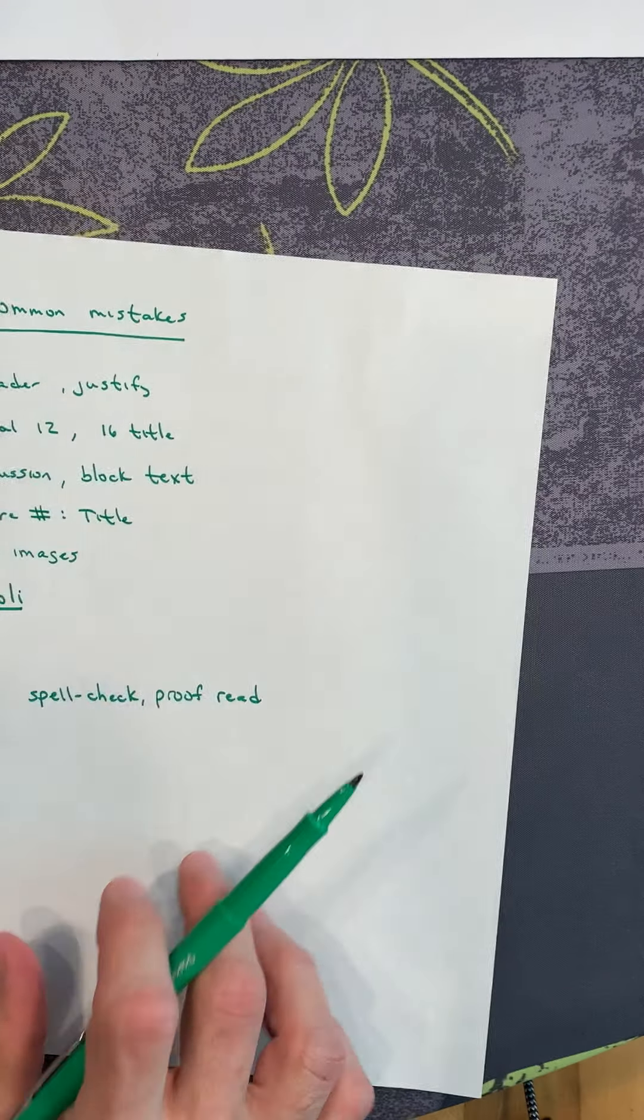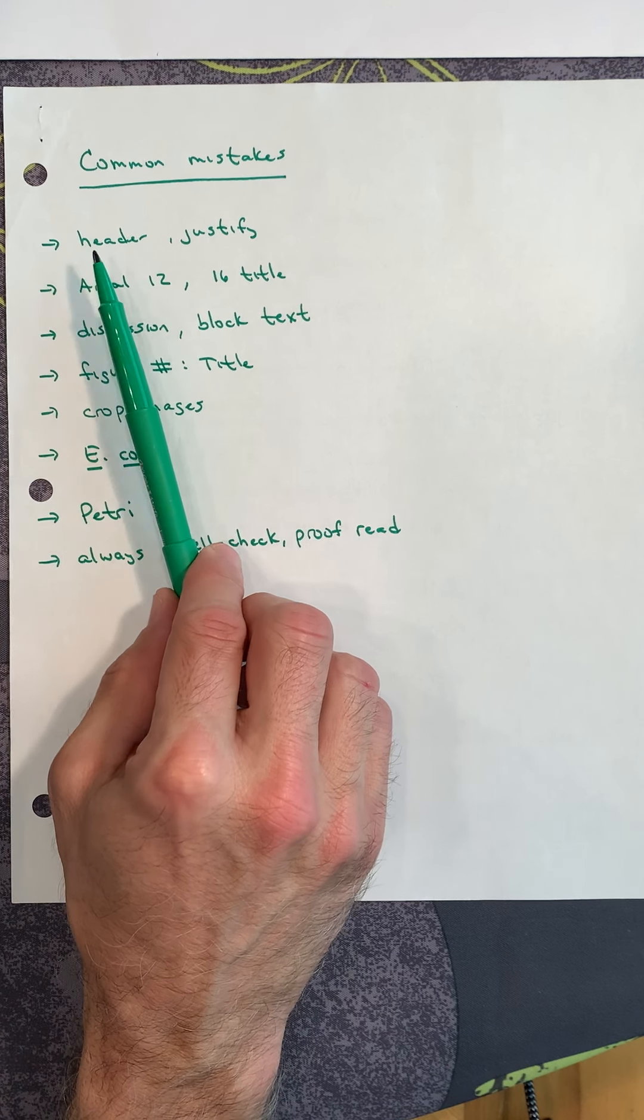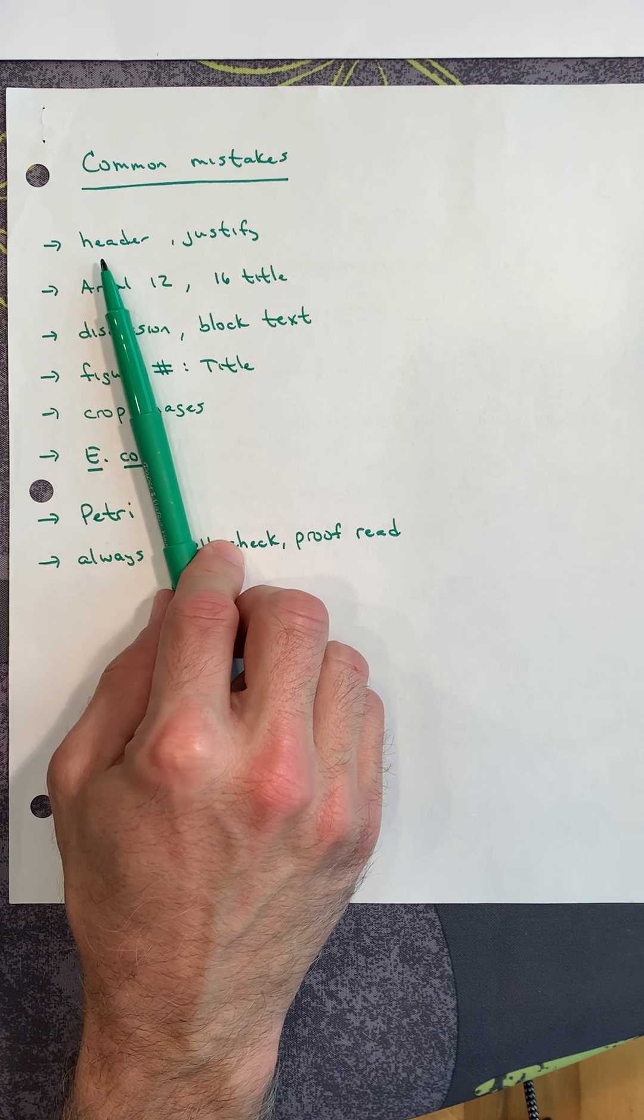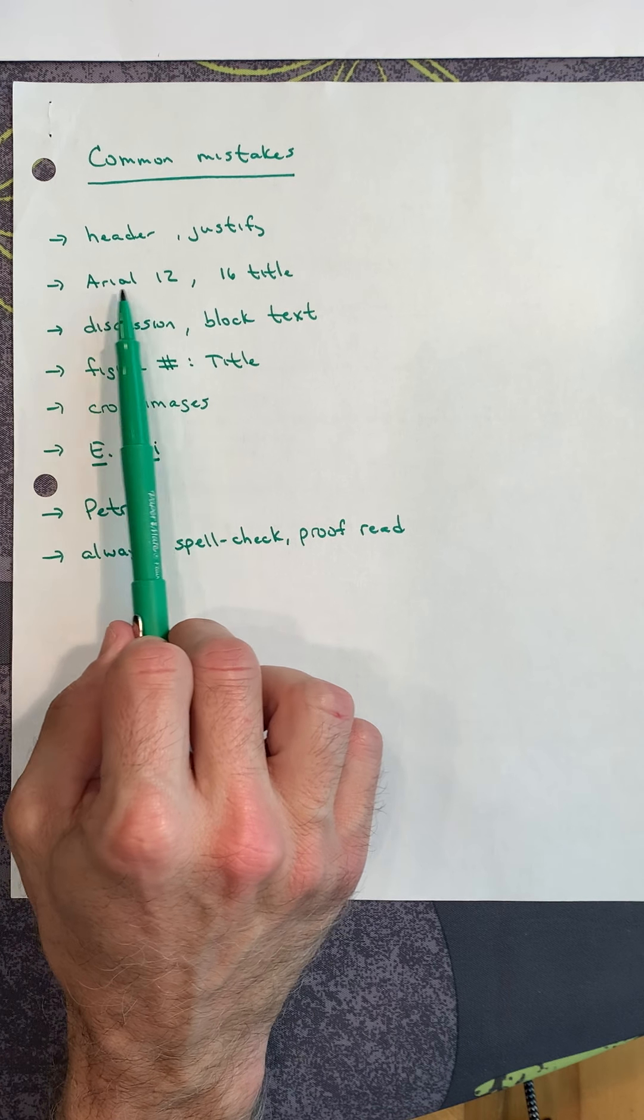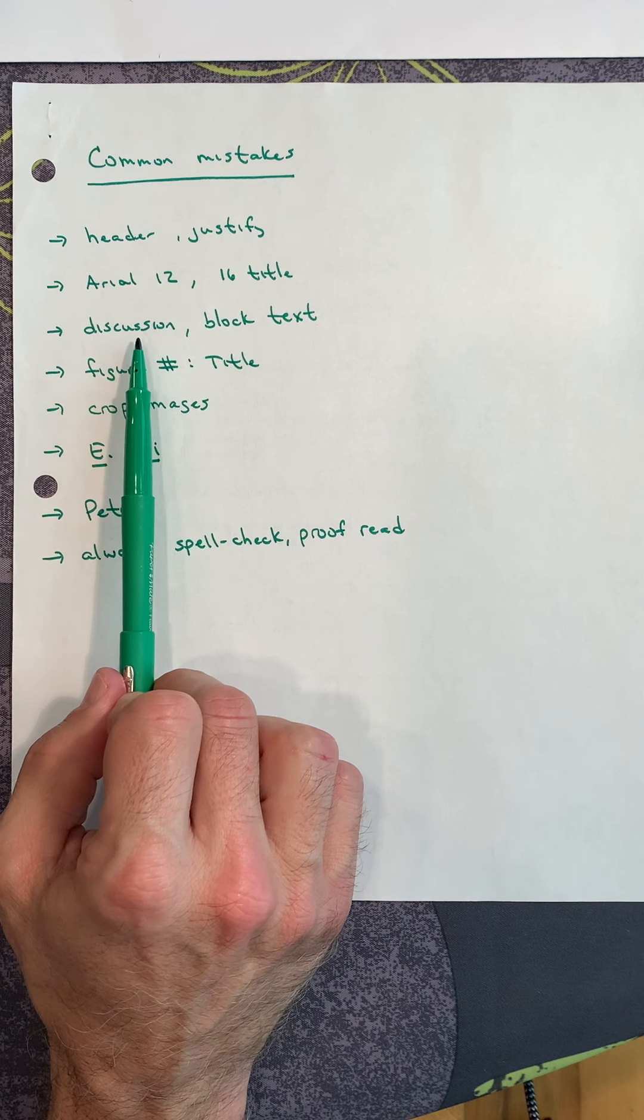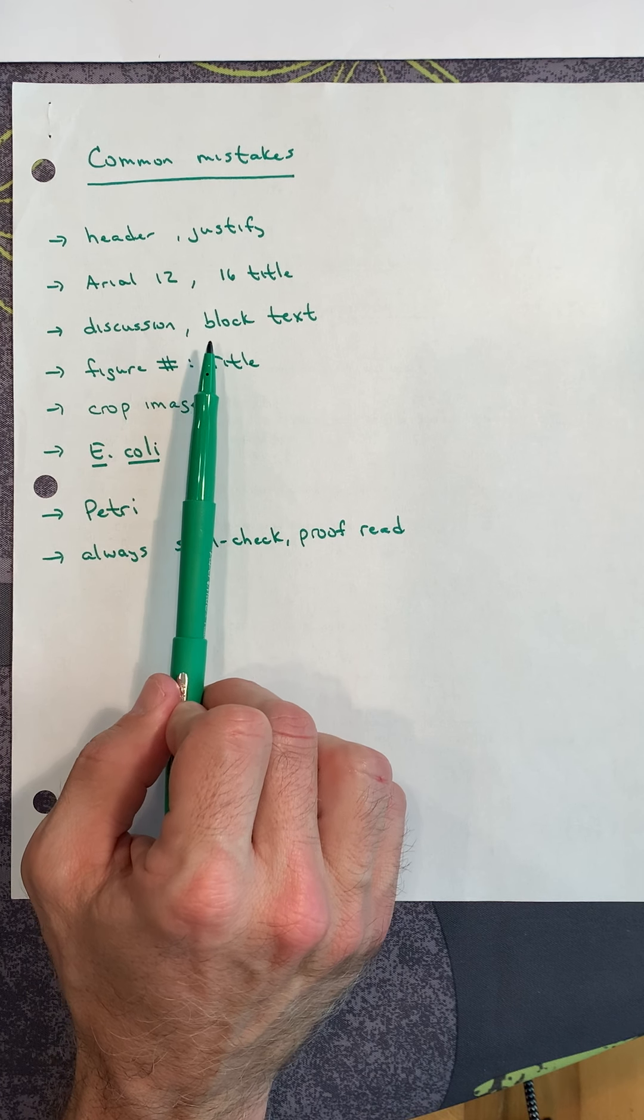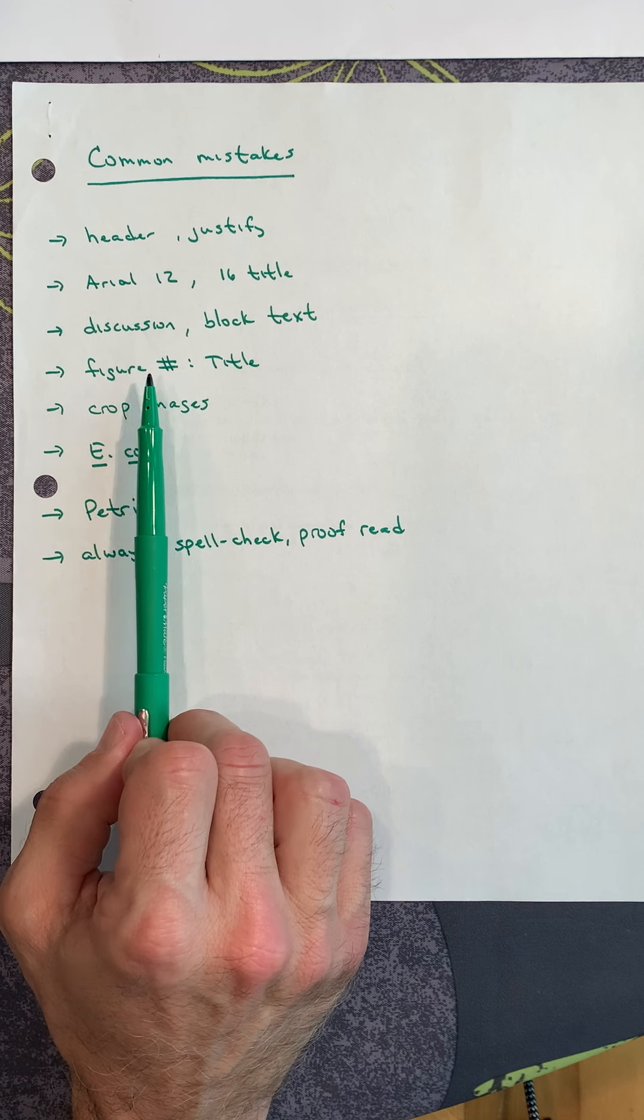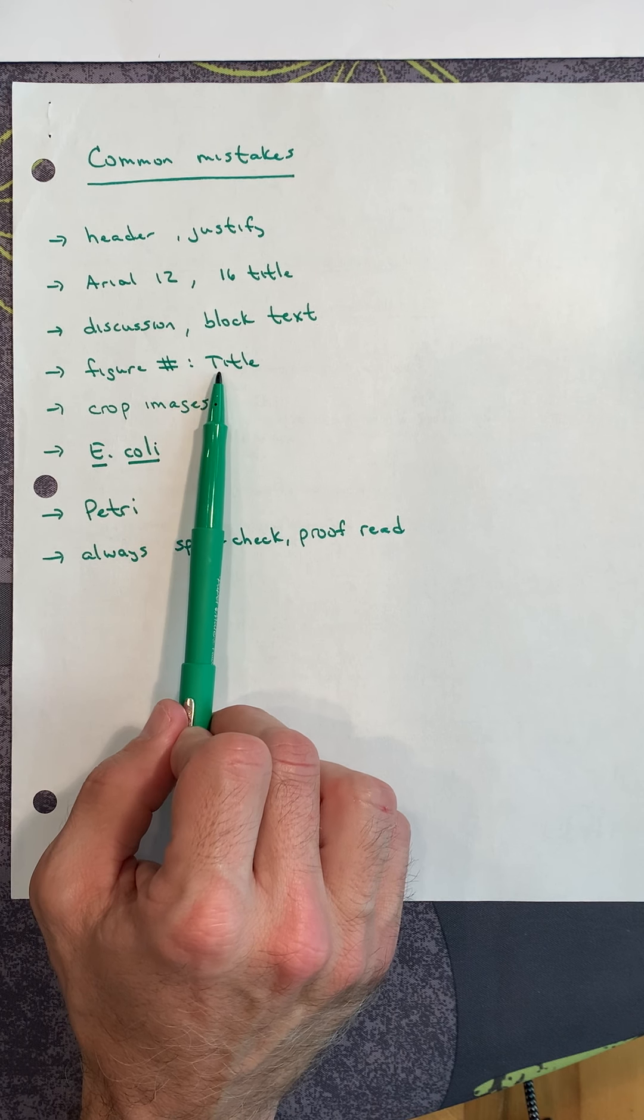So that is your lab write-up. Now, common pitfalls, common mistakes that we see. Commonly see that the header isn't justified, that students don't center the title and they don't push their name and the period over to the right-hand side. Students sometimes don't type in Arial and 12 and they don't put the title in 16. In the discussion, be sure that you block the text. Then be sure that the two figures you put in, that each figure has a number, figure one and figure two, and be sure that you title the figures.